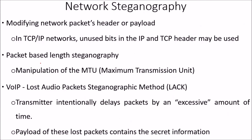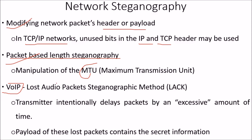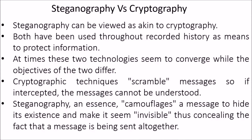Network steganography works by modifying network packet headers or payloads. In TCP/IP networks, unused bits in the IP and TCP headers may be used. Other methods include packet-based length steganography and manipulation of the MTU (Maximum Transmission Unit). In VoIP, the LACK (Lost Audio Packets Steganography) method has the transmitter intentionally delay packets by an excessive amount of time, and the payload of these lost packets contains the secret information.